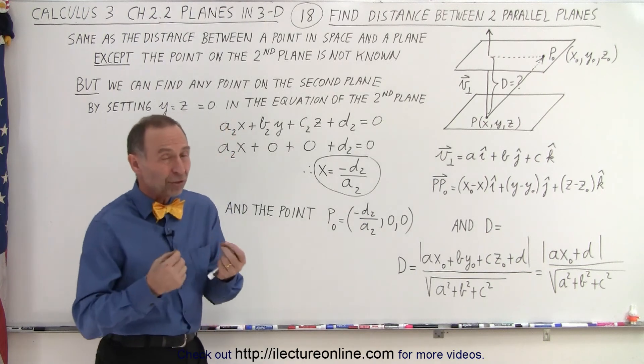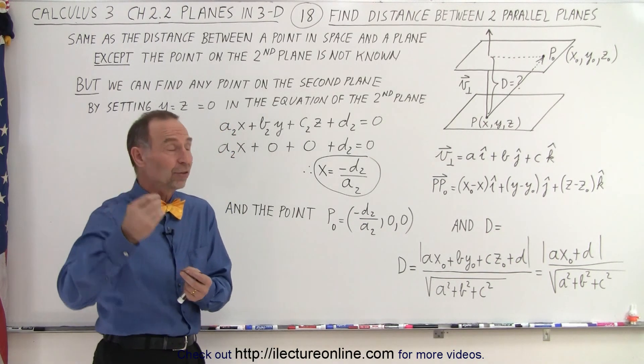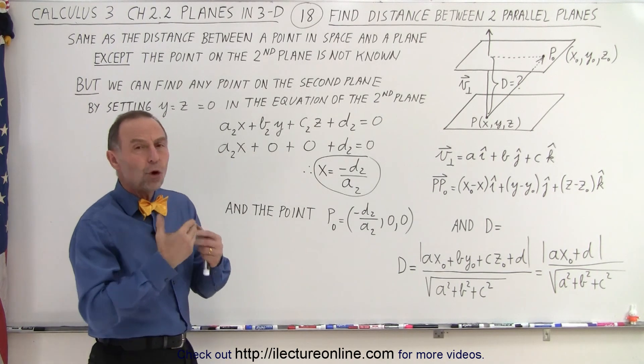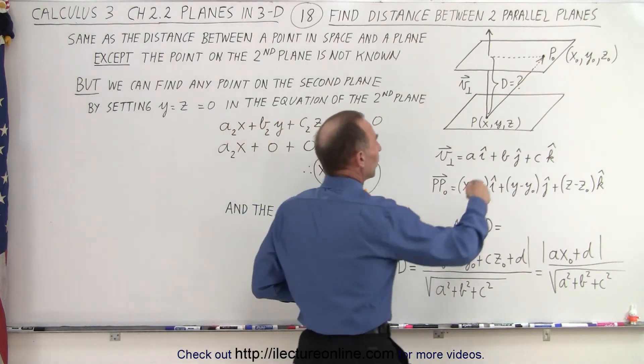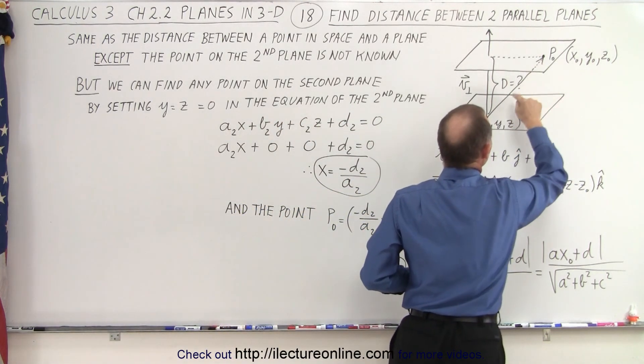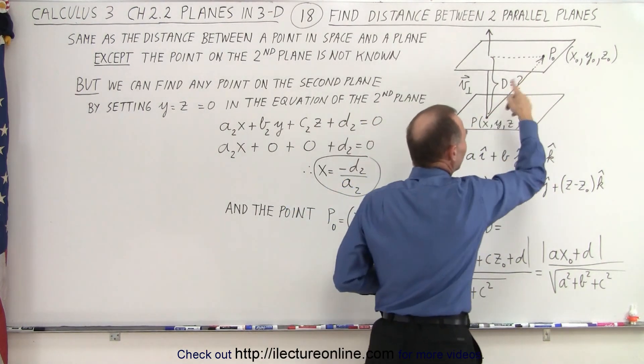Well, it's a similar situation as if we're finding the distance between a point in space and a plane, any point in space. But in this case, we don't know what that point is. So if we take two planes, we need one point on this plane, an arbitrary point on the other plane, to find the distance between the two.